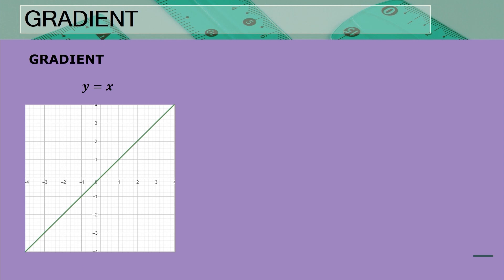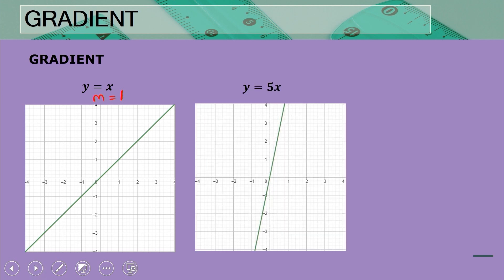We have y = x, where the gradient is one because the coefficient of x is one. Now we compare that with a gradient of five. We can clearly see that the line with a gradient of five is much more steep than the line with a gradient of one.